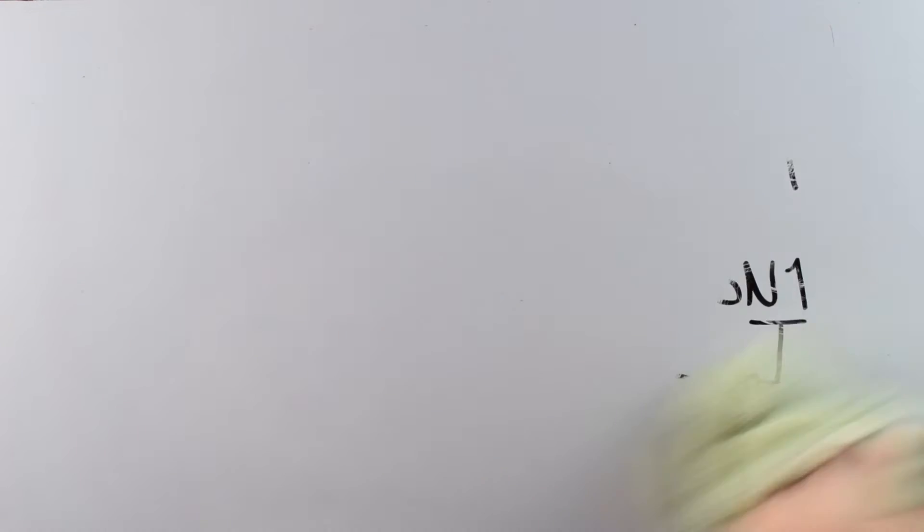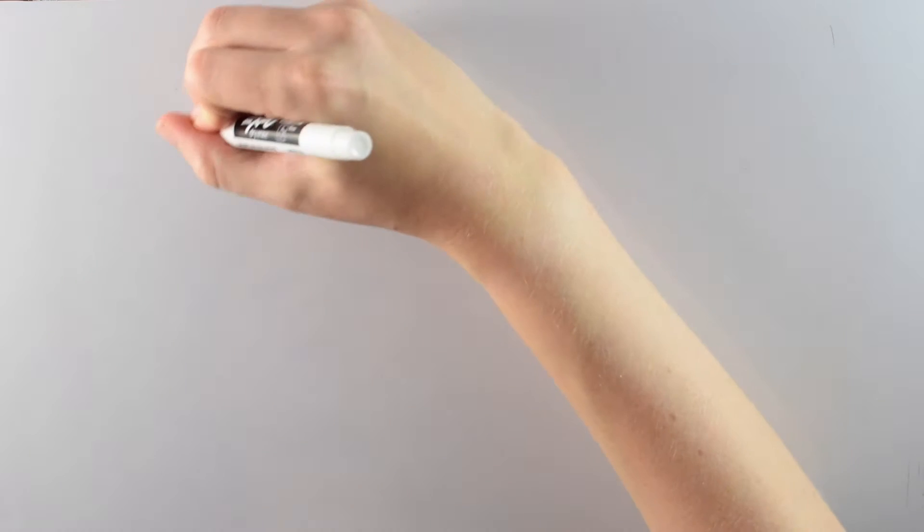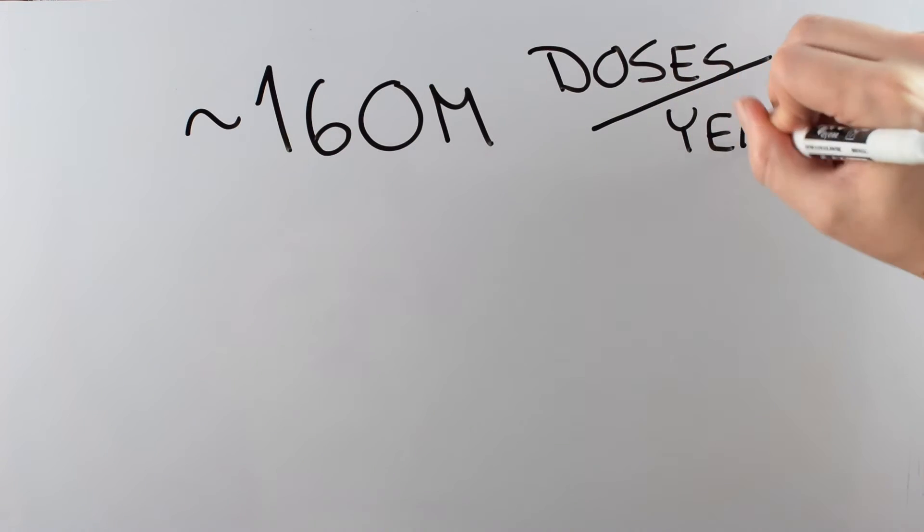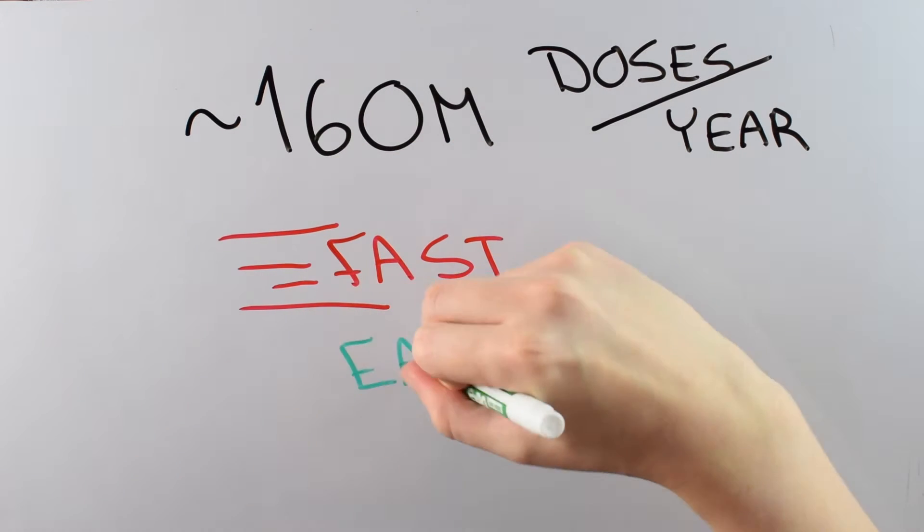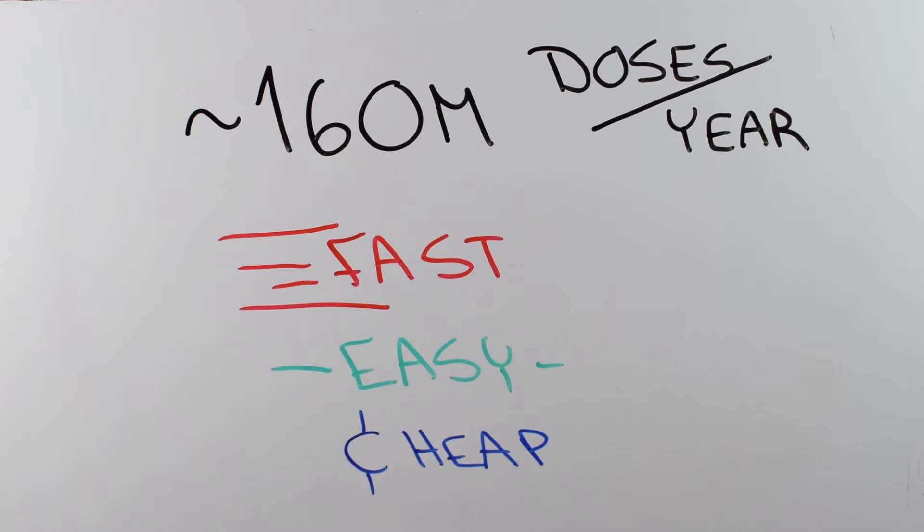So that's all good information about the flu virus, but where do the eggs come in? Well, in order to make enough virus for the approximately 160 million vaccine doses made every year, they need a way to replicate the three or four viruses chosen fast, easy, and cheap. And that's where the eggs come in.